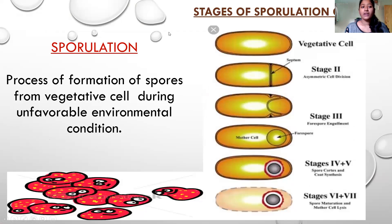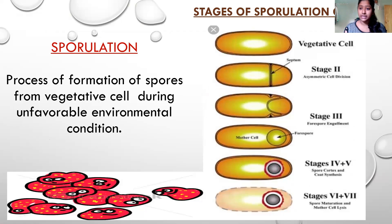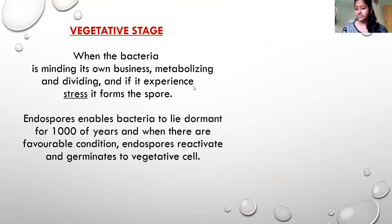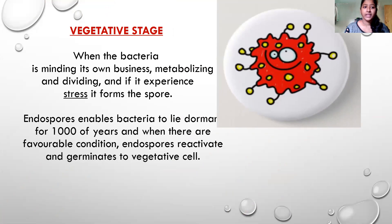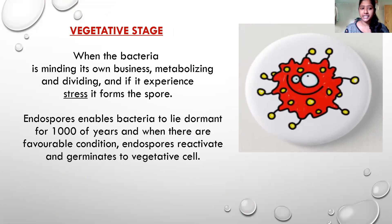Then, sporulation. What is sporulation? The process of formation of spores from vegetative cells during unfavorable conditions is sporulation. These are the various stages: the vegetative stage, then stage two in which the septum is formed, which we will discuss in the next slide. What is the vegetative stage? When the bacteria is metabolizing and dividing normally, and if it experiences stress, it forms the spore.